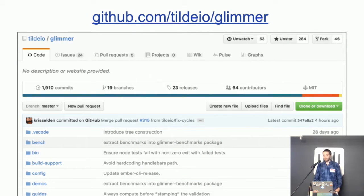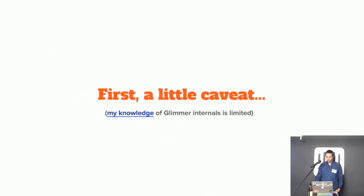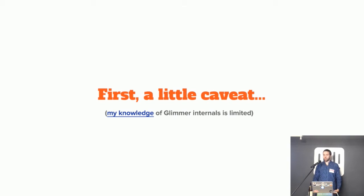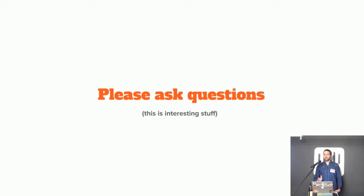Glimmer is the new rendering engine for Ember. It's currently in beta, so if you install the latest Ember beta — 2.9 beta — it includes the Glimmer rendering engine. It's very likely that it will be released in about six weeks with Ember 2.9. I've worked on some of the Glimmer internals, mainly in the integration with Ember itself. There's a lot I don't know about the internals of the rendering engine, but there's a decent amount that I do, and I thought I would talk about some of the things I do understand. Feel free to stop me at any time and ask questions.